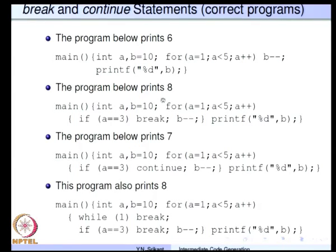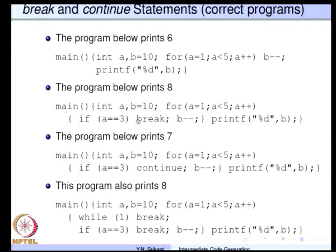Now let us introduce breaks and continues into this loop. The same loop, but the body says: if a equal to 3, break. So for the value of a equal to 3 this loop is terminated. The loop would have executed for a equal to 1 (b becomes 9) and a equal to 2 (b becomes 8), and as soon as a becomes 3 the break comes into picture, the loop is broken, and the control prints out the value of b which is 8.